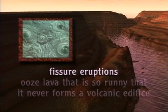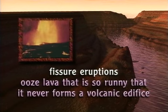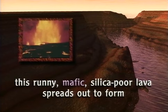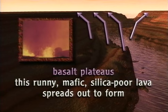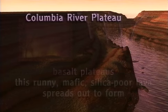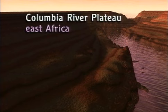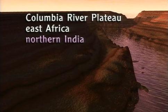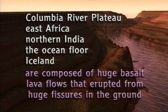Fissure eruptions ooze lava that's so runny it never forms a volcanic edifice. This runny, mafic, silica-poor lava spreads out to form basalt plateaus — broad areas covered with hardened mafic lava. The Columbia River Plateau in the U.S., all of East Africa, much of northern India, nearly all of the ocean floor, and most of the island of Iceland are composed of huge basalt lava flows that erupted from fissures in the ground.